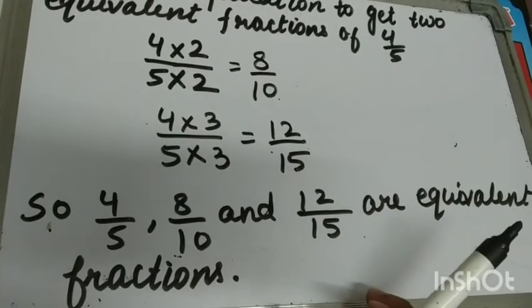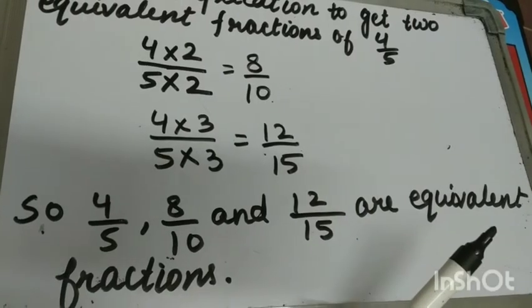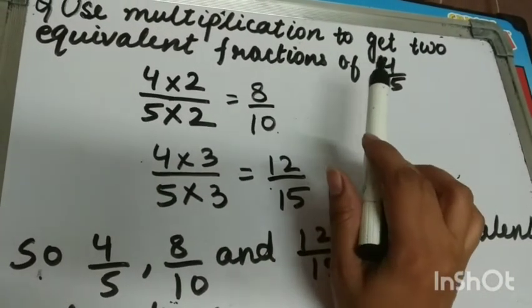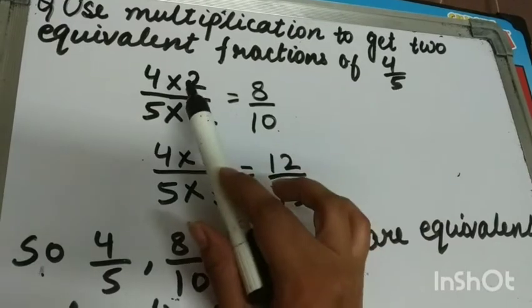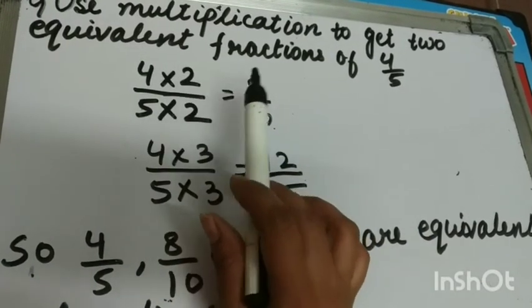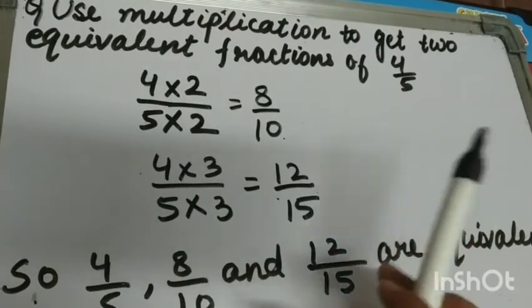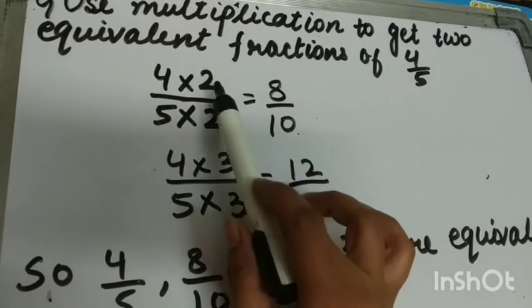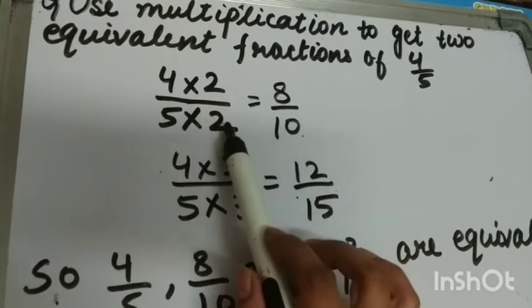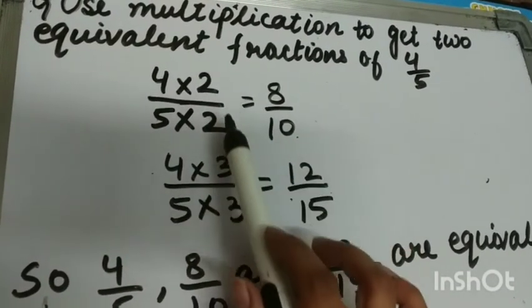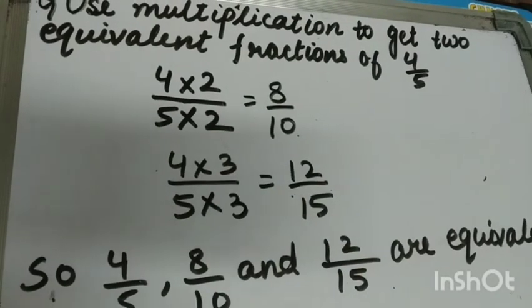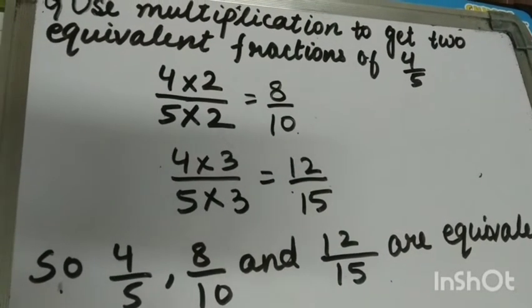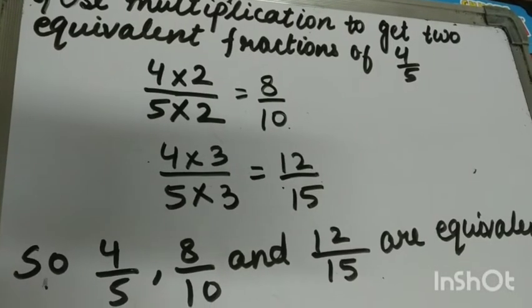So four upon five, eight upon ten, and twelve upon fifteen are equivalent fractions. To find equivalent fractions, we multiply the numerator and the denominator of the given fraction by the same non-zero number. Here I took two and three, so I multiplied numerator and denominator by two and three respectively. This is how we find equivalent fractions through multiplication.